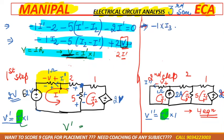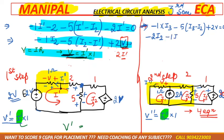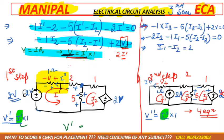The first mesh equation is: minus 1 times i3, minus 5 times (i3 minus i2), plus 2 volts equals 0. For the supermesh equation: minus 2 times i2, minus 1 times i1, minus 5 times (i2 minus i3) equals 0. These form the first and third mesh equations respectively.